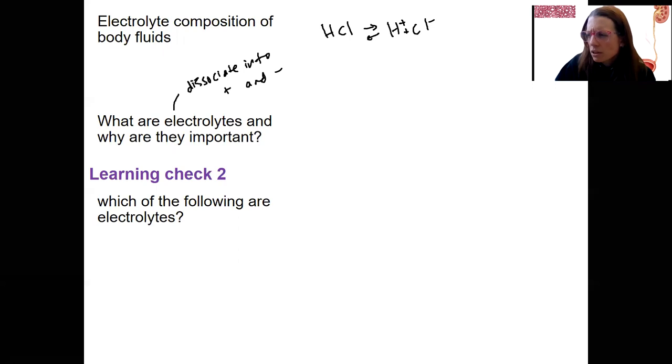Which of the following are electrolytes? Here's your learning check too. And these are things you've all seen. We've talked about sodium, chloride, bicarbonate. Notice when we say sodium, often you think of it as NaCl. That Na and Cl dissociate to become the sodium and the chloride. Sodium chloride is this.